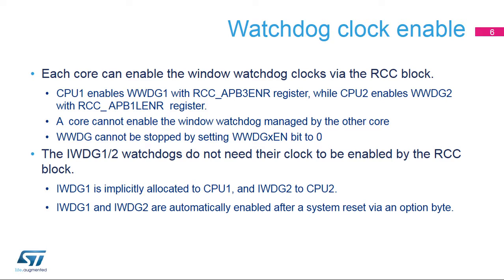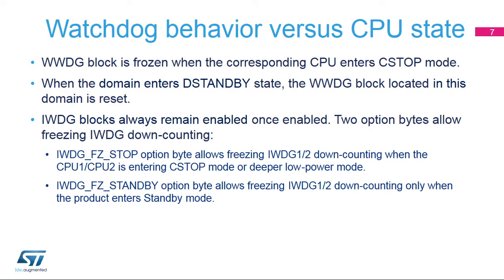IWDG1 is implicitly allocated to CPU1 and IWDG2 to CPU2. An option byte allows IWDG1 and IWDG2 watchdogs to be automatically enabled after a system reset. A WWDG block is frozen when the corresponding CPU enters the C-STOP mode. When the domain enters D-standby state, the WWDG block located in this domain is reset.